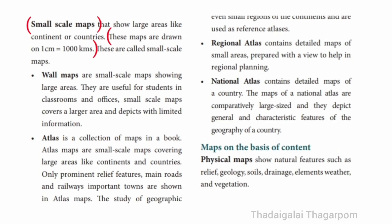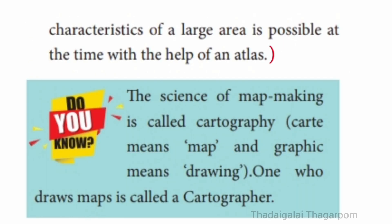Small scale maps are drawn on 1 centimeter equal to 1000 kilometers. Wall maps are small scale maps showing large areas. Small scale maps cover a large area and depict limited information. Atlas is a collection of maps in a book; atlas maps are small scale maps covering large areas like continents and countries. The study of geographic characteristics of a large area is possible with the help of an atlas.